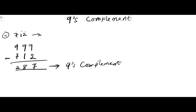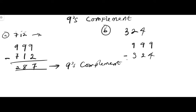Let's take another example. Let's find the nine's complement of 324. We subtract 324 from 999: nine minus four is five, nine minus two is seven, nine minus three is six. So the nine's complement of 324 is 675.